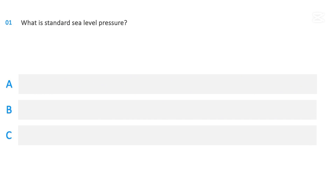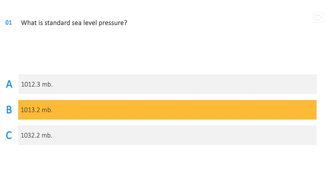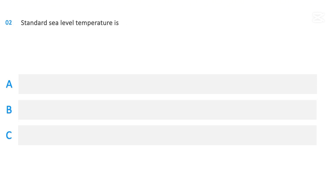What is standard sea level pressure? Options: 1012.3 millibar, 1013.2 millibar, or 1032.2 millibar. The correct answer is 1013.2 millibar.